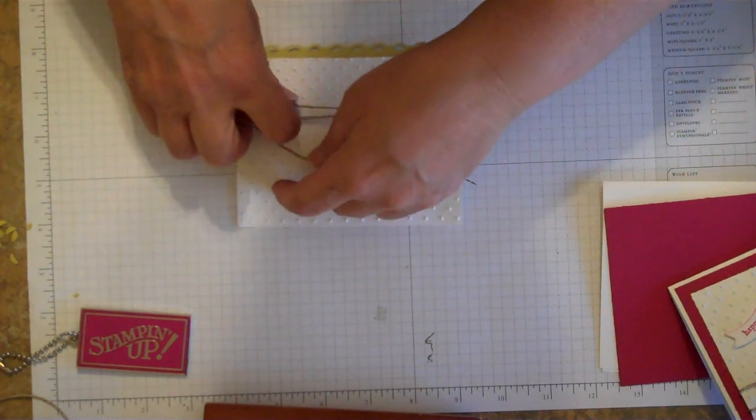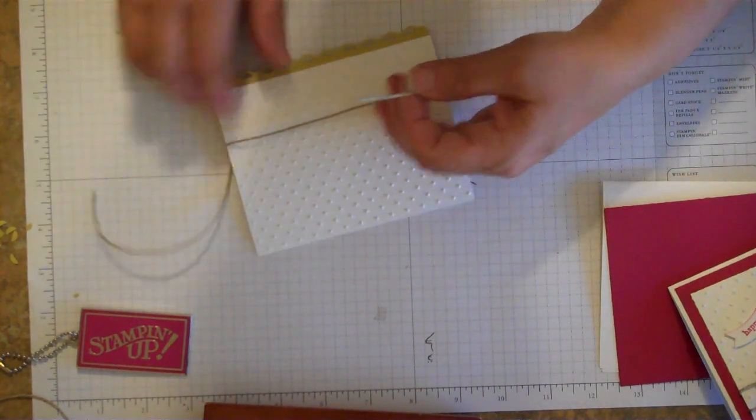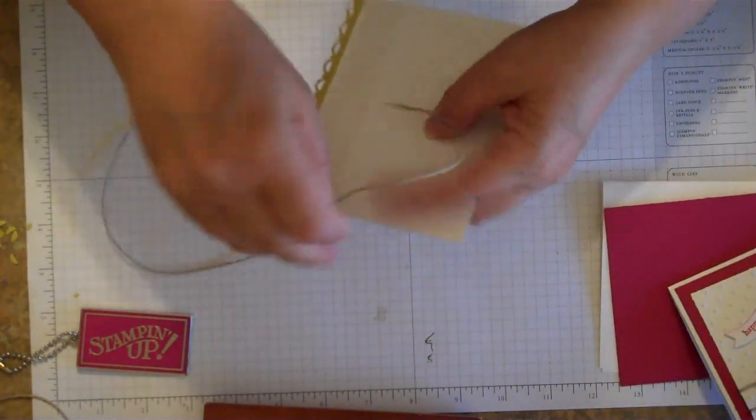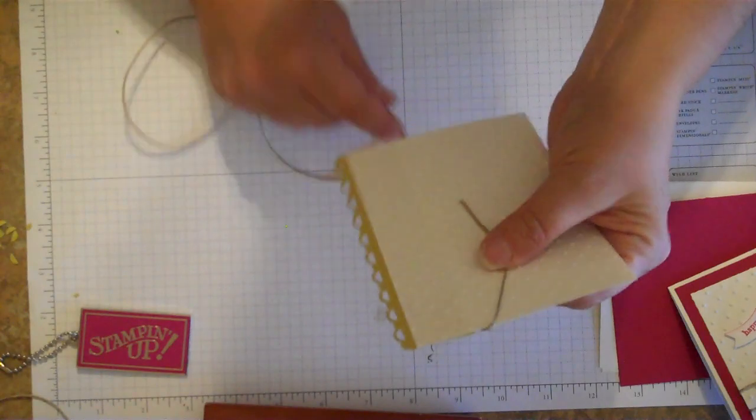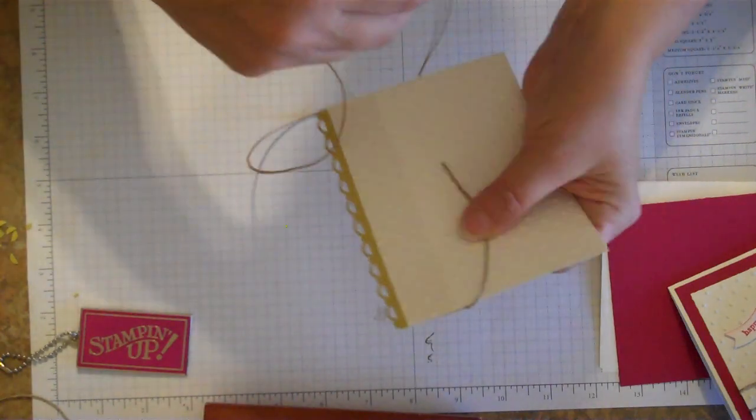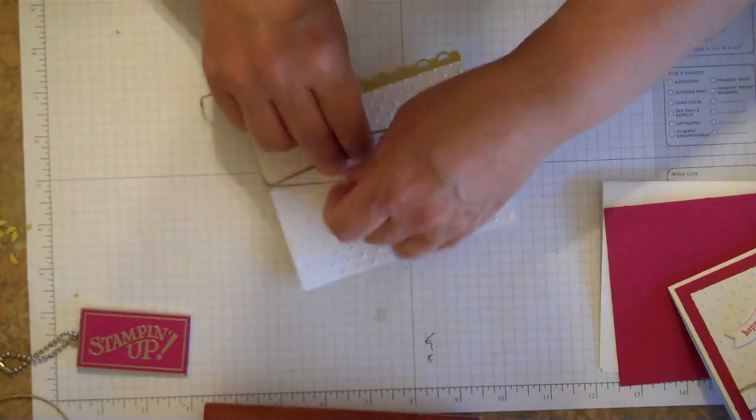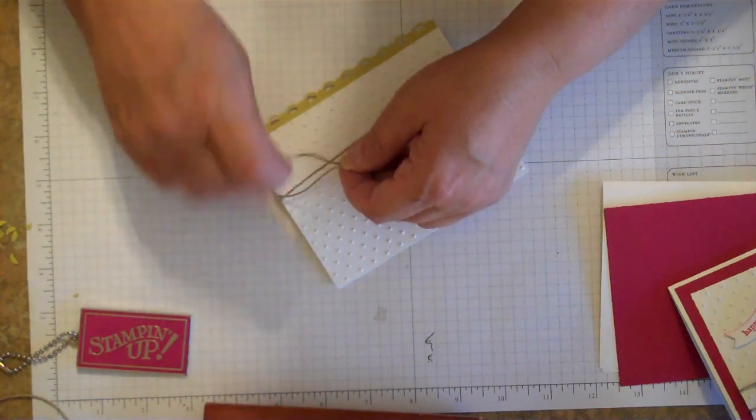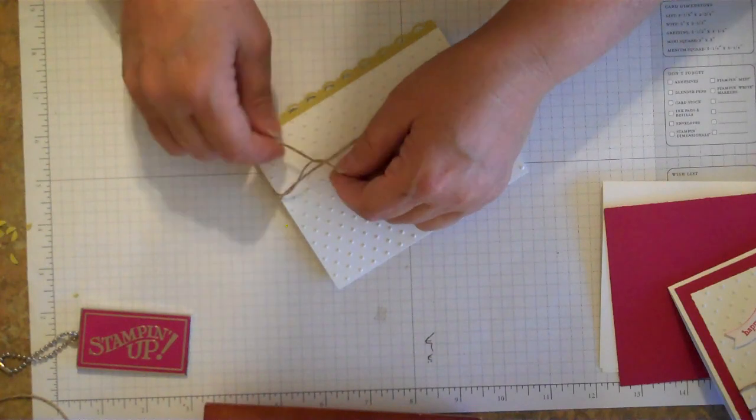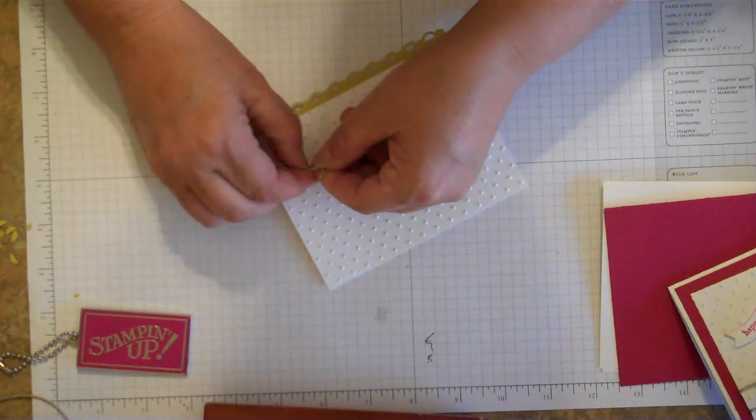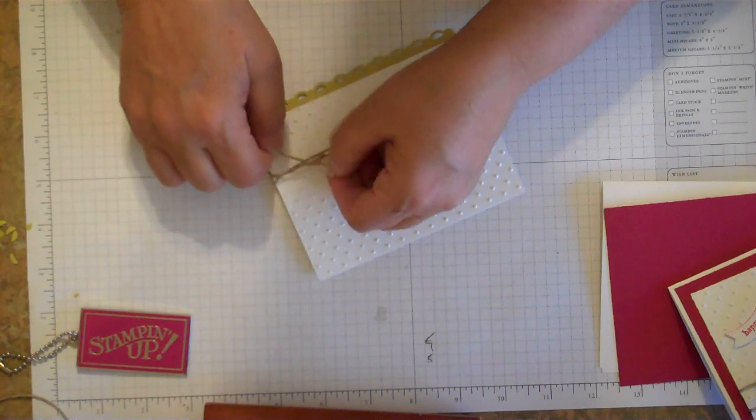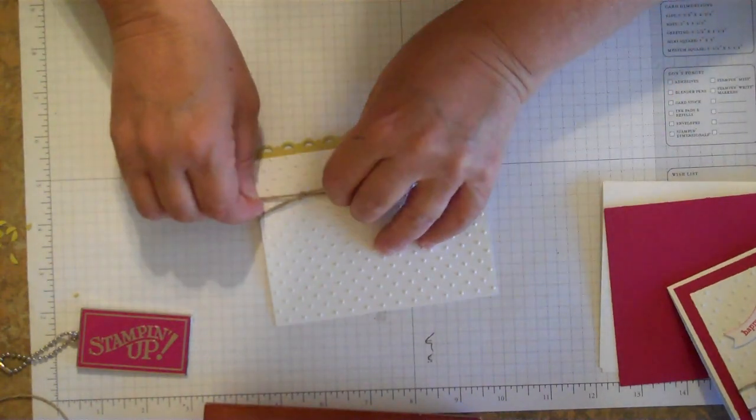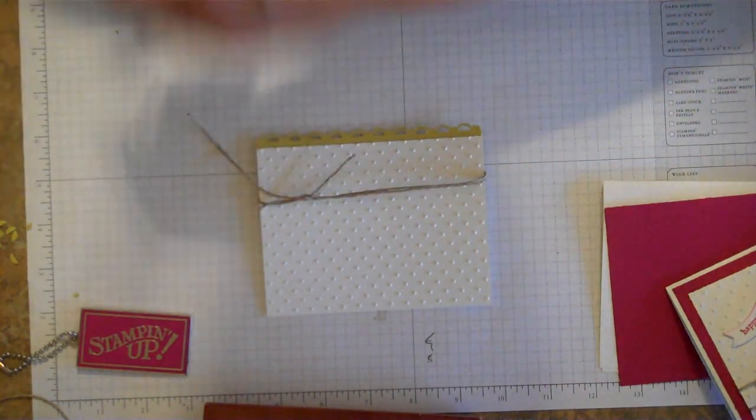And nothing fancy here, we're just basically tying a knot. I'm going to give myself just a little bit more thread here. And don't pull it too tight because you don't want your card to bow or rip, so it's kind of a gentle knot and then you can always loosen this up a little bit if you have to. Alright and then we'll trim this off a little bit.